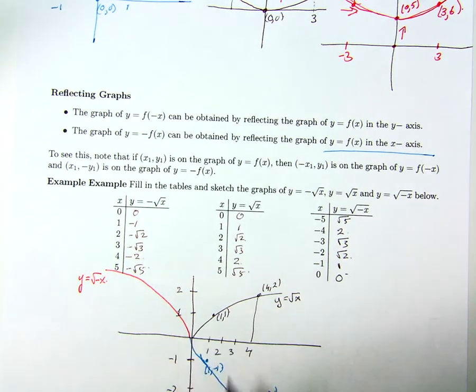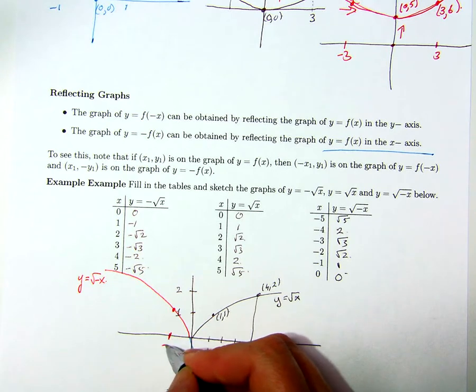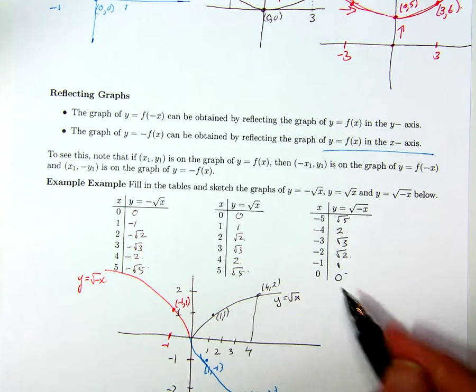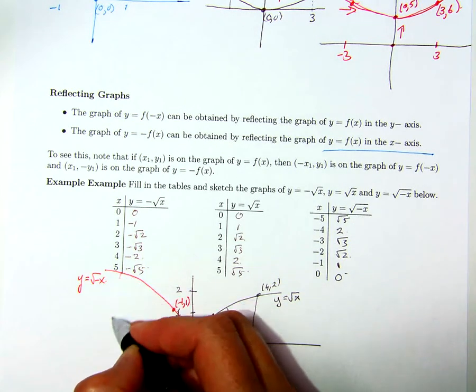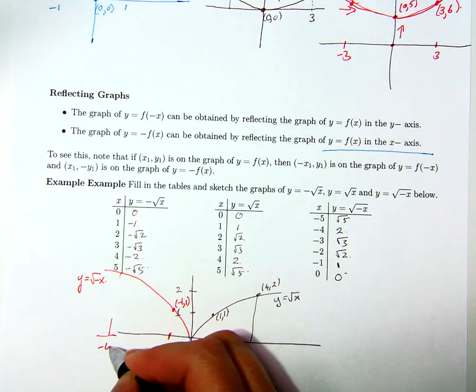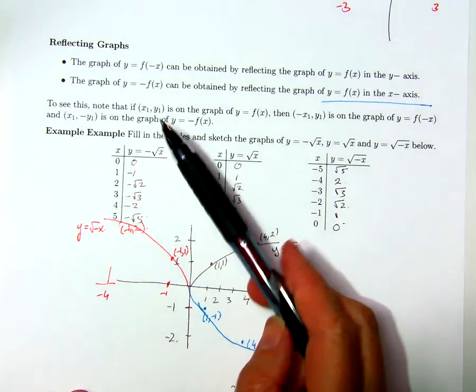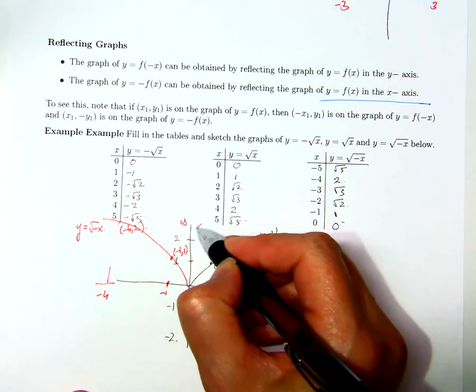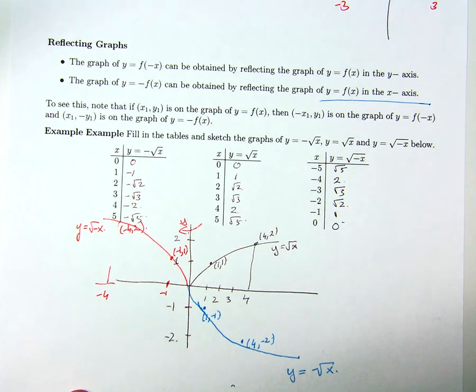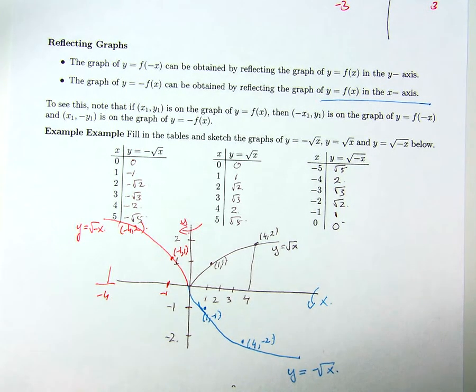This changes the entire domain of the function. I get the point (-1, 1) on this graph, and also the point (-4, 2). So if I replace x by -x, the graph gets reflected in the y-axis. And if I replace f(x) by -f(x), the graph gets reflected in the x-axis.